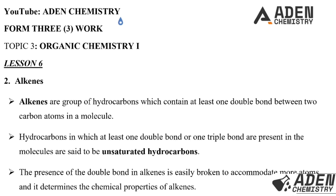Hello students, welcome. Previously in lesson 5, Form 3, Topic 3, we dealt with the chemical properties of alkanes and the uses of alkanes. Today in lesson 6, we want to proceed to the second class of hydrocarbons, which are alkenes. So let's start to know what alkenes are.